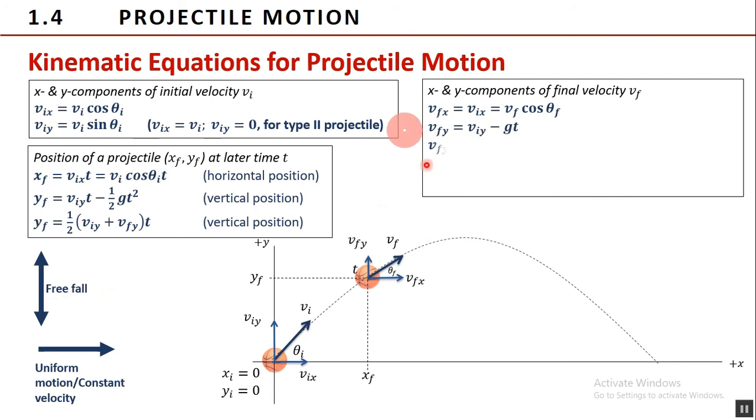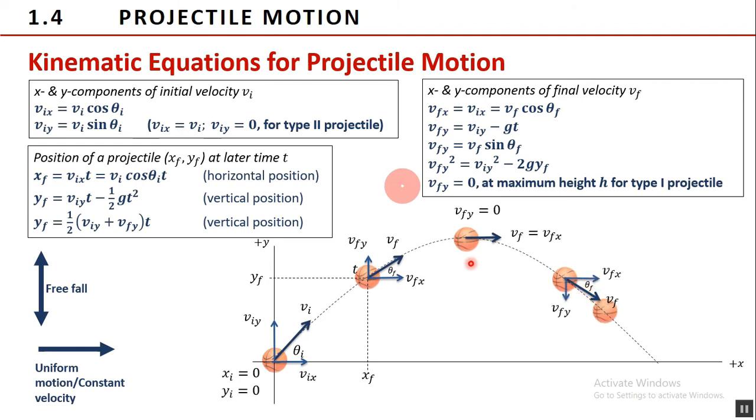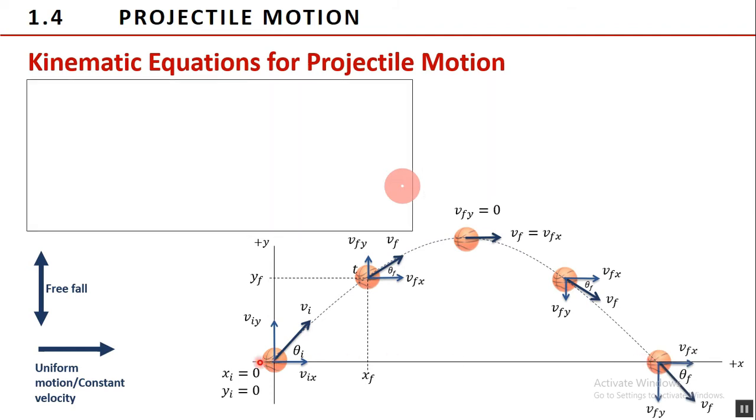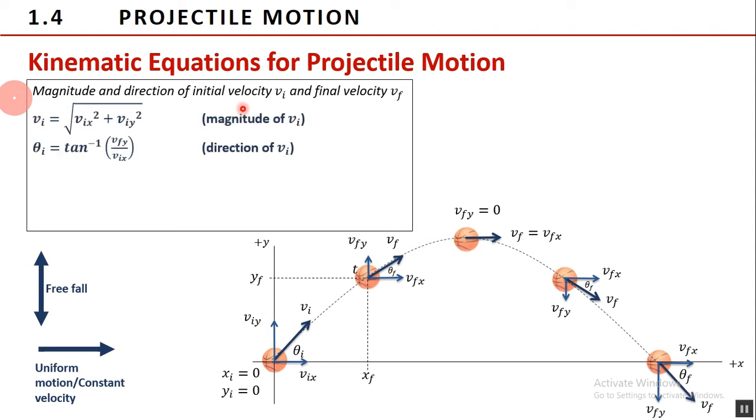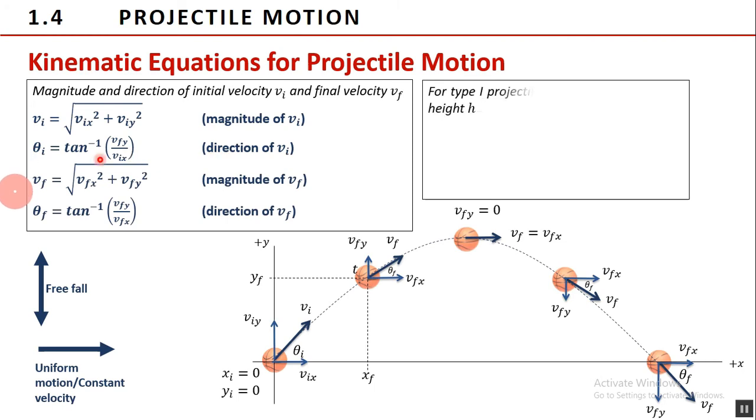At maximum height, same as with freefall, v sub f y is zero for type one projectile. At this location, momentarily, its velocity is horizontally equal to the x component of the initial or final velocity. Afterwards, it begins to fall following the other half of trajectory as it returns to its initial elevation. Other formulas will be the magnitude and direction of the initial and final velocities. There is no problem hereafter knowing the x and y components of the velocities. We simply use Pythagorean theorem for the magnitude and the inverse tangent function of a right triangle.